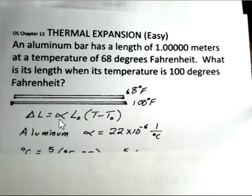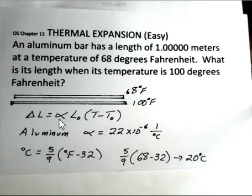We need to change these temperatures in Fahrenheit to Celsius. So I've retrieved the value of alpha, the thermal expansion coefficient for aluminum, 22 times 10 to the minus 6, 1 over degrees Celsius.